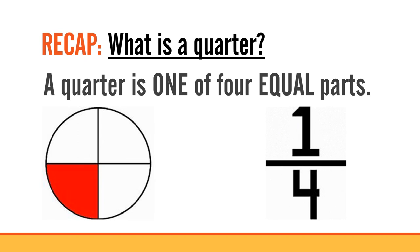A quick recap of what is a quarter? A quarter is one of four equal parts. Here a quarter of the circle is shaded in red. A quarter is also written as one over four.